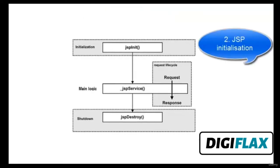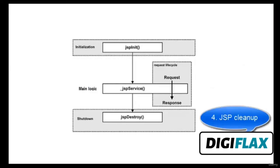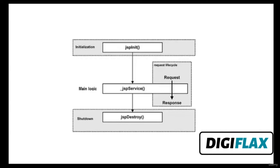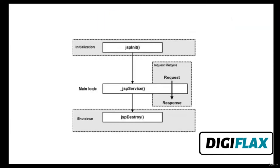A JSP page is divided into two categories: elements processed on the server — which are the embedded JSP tags — and template data, which is the static data. The embedded JSP tags, called elements, are classified into the following categories: directives, scripting elements, and standard actions. We will learn these categories in the next video tutorials.